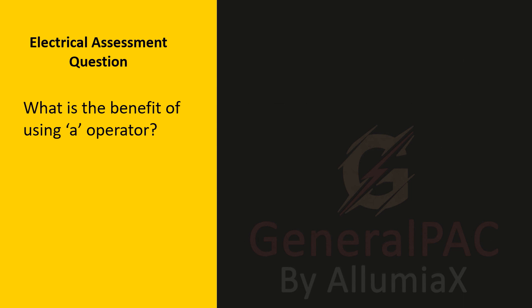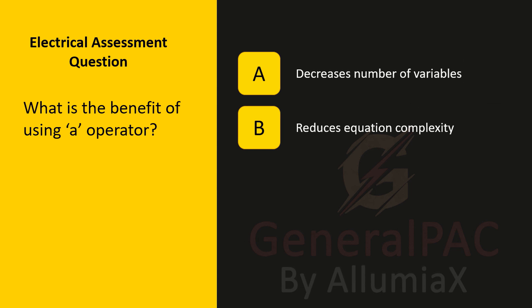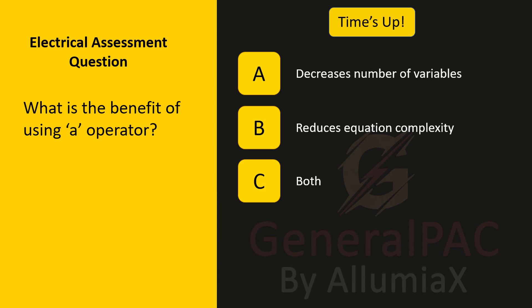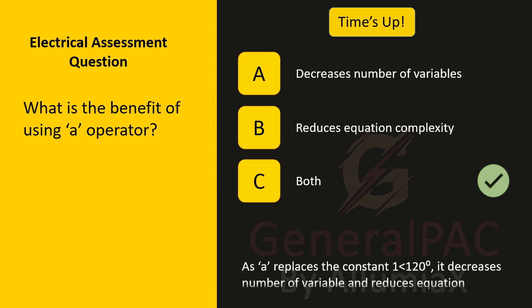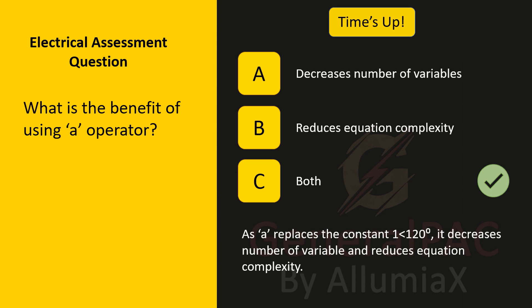What is the benefit of using the A operator? Is it to decrease the number of variables, to reduce equation complexity, or both? It is both. The A operator places the constant 1 at the angle of 120 degrees. It decreases the number of variables and reduces the equation complexity.